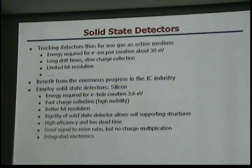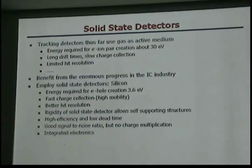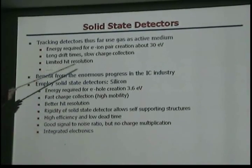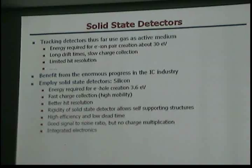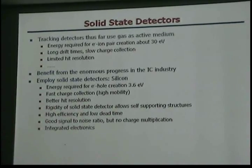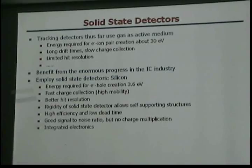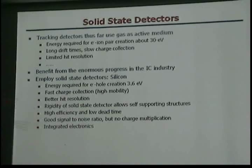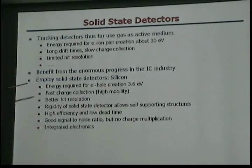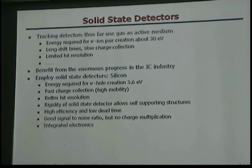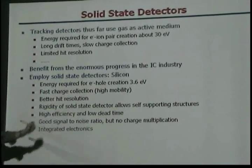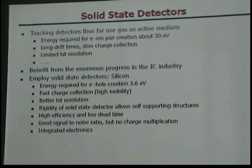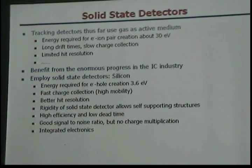We are moving more and more towards solid-state detectors, and the reason for that is the following. The energy required for electron-ion pair creation in gas is about 30 electron volts, which is relatively high. You need to drift electrons and all that — it's slow. So we benefited from the progress in the integrated circuit industry. We employ solid-state detectors, and specifically we employ silicon, which I dare say runs the world at the moment.